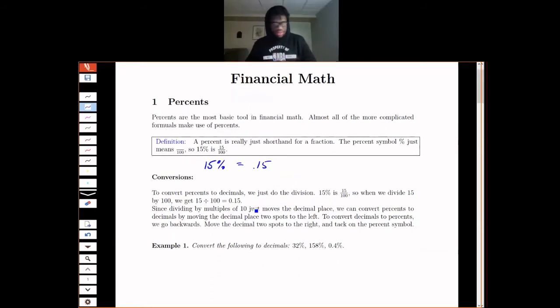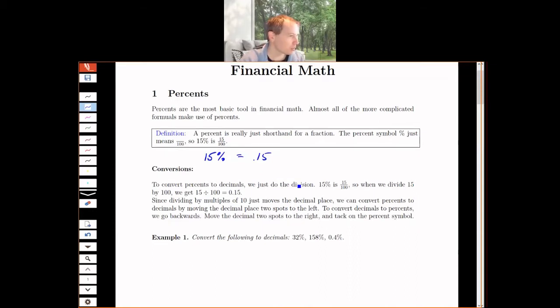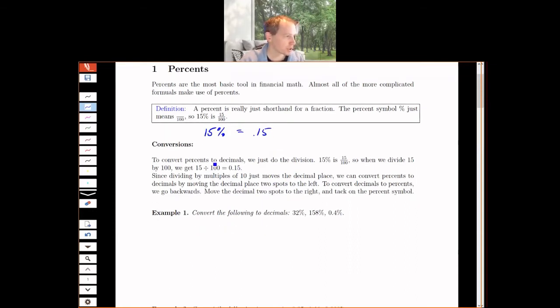So we'll look at conversions. Since a percent is really just a fraction, we'll review how to go back and forth between fractions and decimals. If I want to convert a percent to a decimal, we just do the division. If I have 15%, that is shorthand for the fraction 15 over 100, so we take 15 and divide it by 100, and I get 0.15.